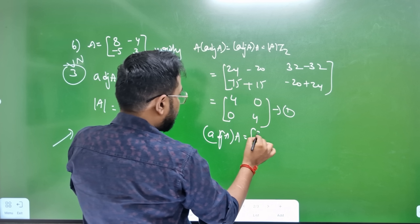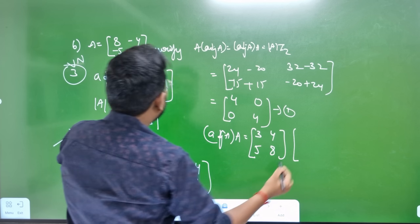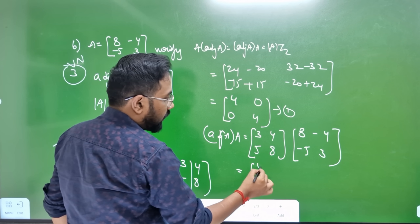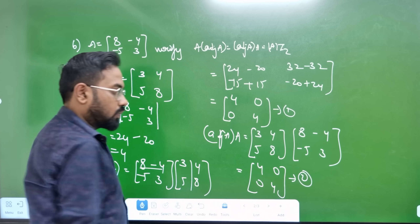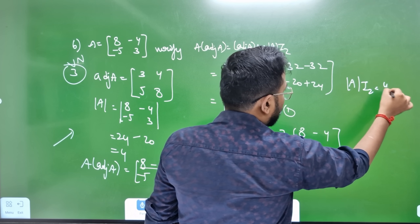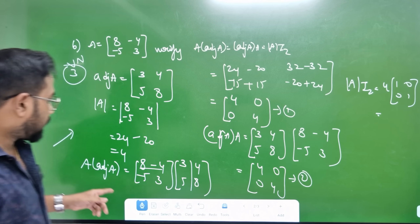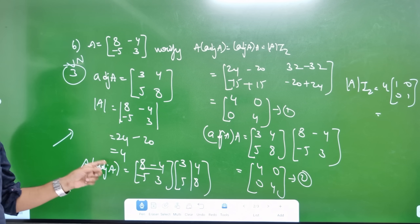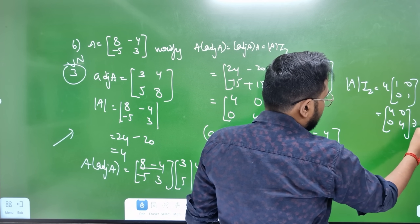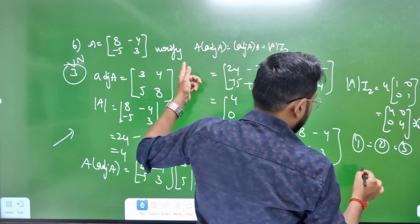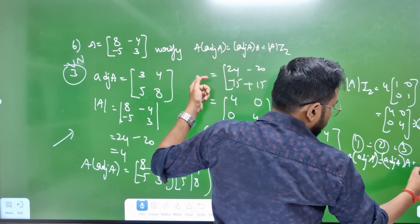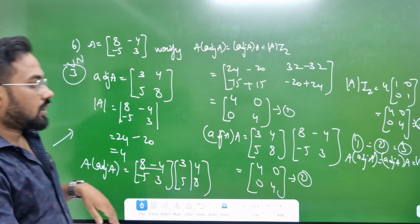Adjoint A into A — adjoint A is [3, 4; 5, 8], A is [8, -4; -5, 3]. The last equation is the determinant: A into I₂. The determinant of A is 4. I is [1,0; 0,1] — that's the unit matrix. So determinant is 4 times I₂, giving [4,0; 0,4]. Third equation: 1 equals 2 equals 3. This proof — A into adjoint A is equal to adjoint A into A, equal to determinant A into I₂. Hence proved.